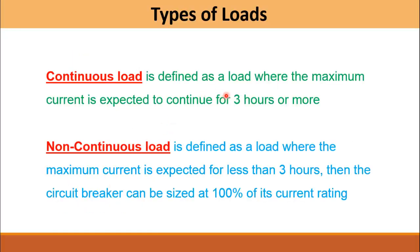The continuous load is defined as the load where the maximum current is expected to continue for three hours or more — for such loads, the circuit breaker is sized at 125% of the full load current. The non-continuous load is defined as the load where the maximum current is expected for less than three hours, so the circuit breaker can be sized at 100% of its maximum current rating.